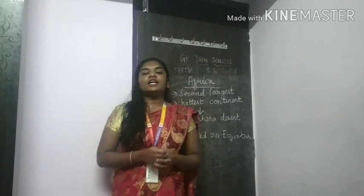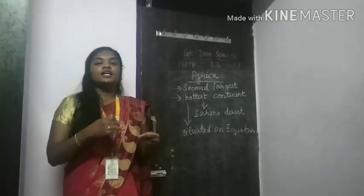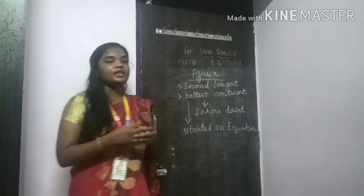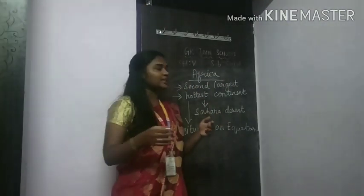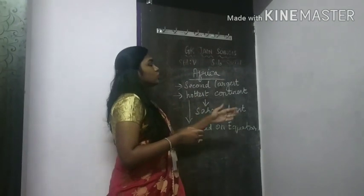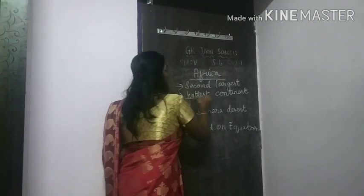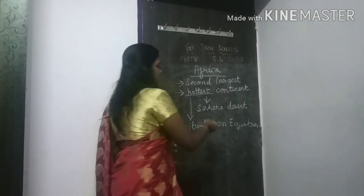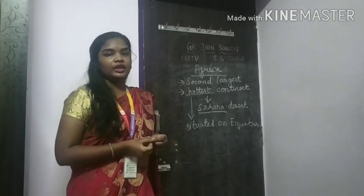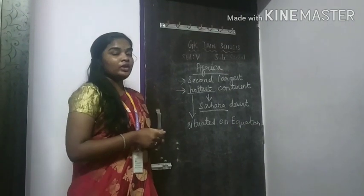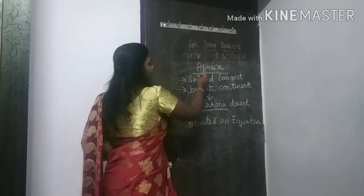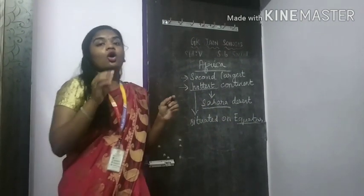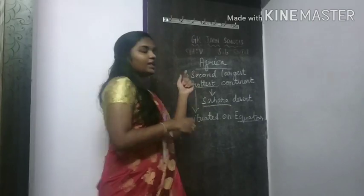Africa is the second largest continent, next to Asia. It is the hottest continent among all the 7 continents. Why? Because the largest desert, that is the Sahara Desert, is present in the African continent. Another reason is that Africa is situated on the equator, which is the center part of the earth.